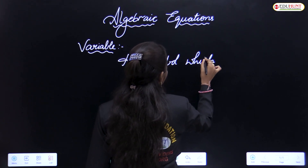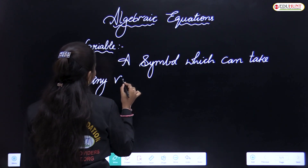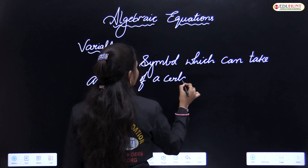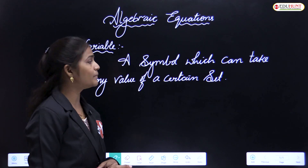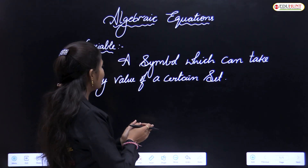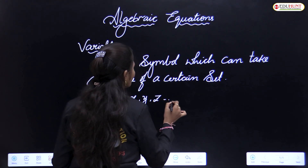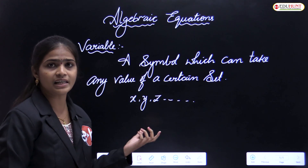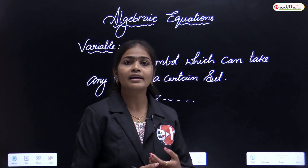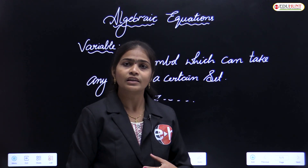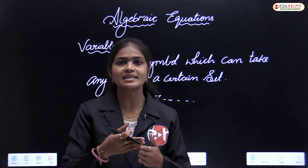A symbol which can take any value of a certain set is called a variable. For example, x, y, z — generally if you don't know an unknown value, we use a variable. If you don't know the cost price of one book but want to purchase 10 books, how will you write that expression?